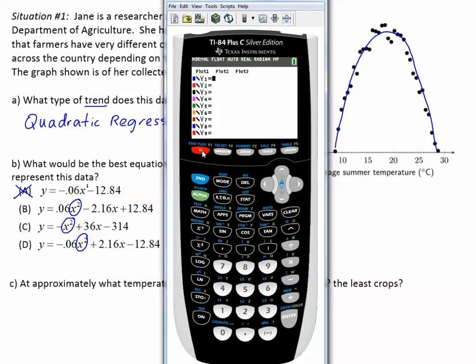If you press y equals, let's type in choice B, 0.06x² - 2.16x + 12.84.